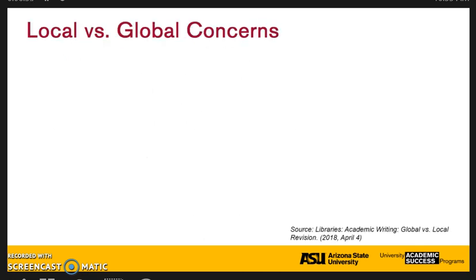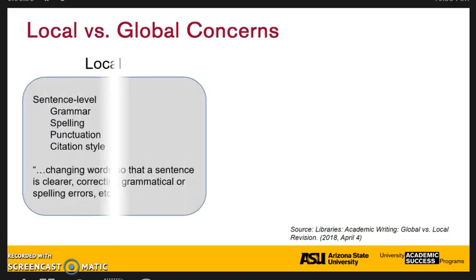Let's review the difference between local and global concerns in a writing document. Local concerns address sentence level issues like grammar, spelling, punctuation, and citation style. Often, these issues are related to changing words so that a sentence is clearer.